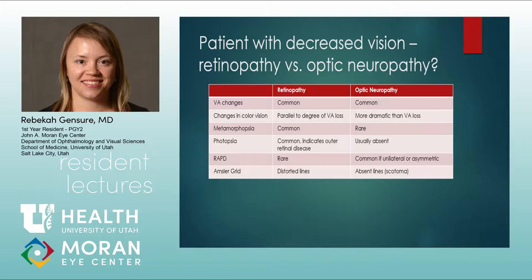A quick bedside color test: bring your eye handbook and go through color plates, or simply hold up a phenylephrine cap and test color sensitivity between the two eyes. Metamorphopsias and photopsias are much more common in retinopathy — photopsia usually indicates a problem in the outer segments. An afferent pupillary defect is rare with retinal problems but more common with optic neuropathy. Scotomas can occur in retinopathy, but typically there is more distortion on the Amsler grid with retinopathy versus chunks missing with optic neuropathy.